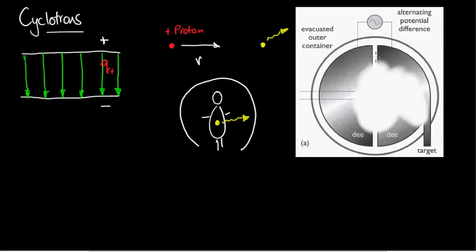These two things are the D's. We call them D's because they're kind of D-shaped, or this one is anyway, and they're essentially copper electrodes.